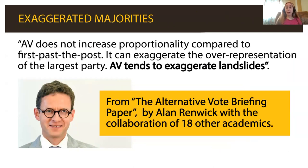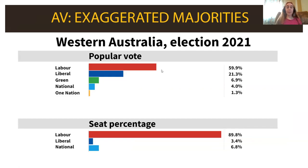Alan Renwick, director of the UK Constitution Unit, wrote in his AV briefing paper: alternative vote does not increase proportionality compared to first past the post. It can exaggerate the over-representation of the biggest party and exaggerate landslides. As an example, in a recent Western Australia election, the Labour Party got almost 60% of the popular vote, but that delivered them 90% of the seats — funneling all small party and opposition votes into the big party until there's almost no representation for anybody else.